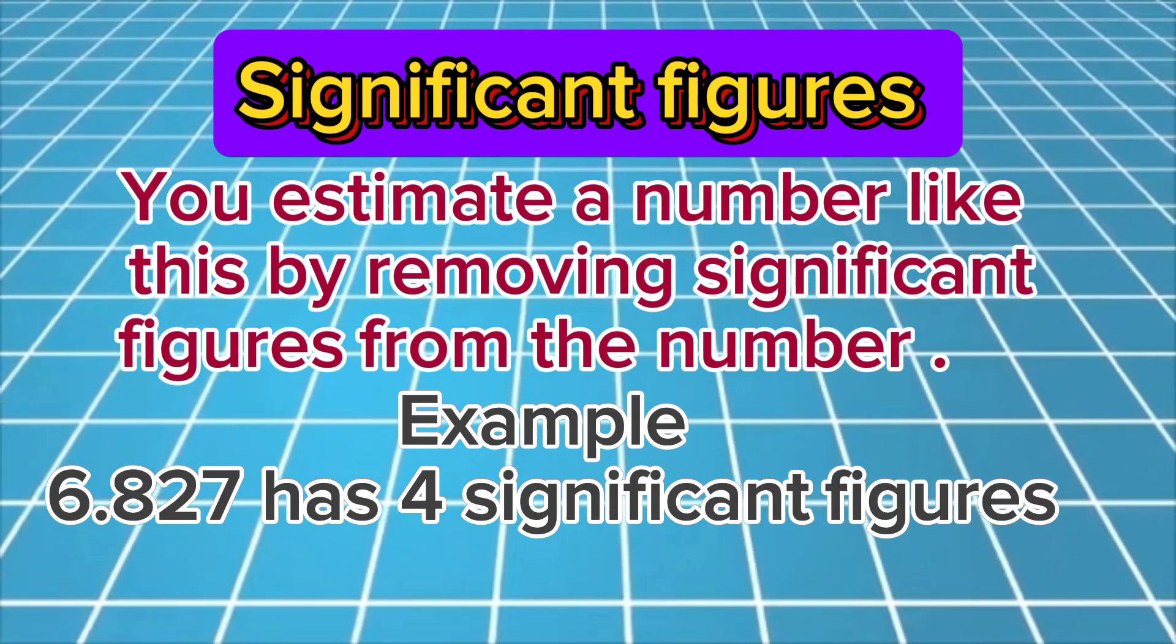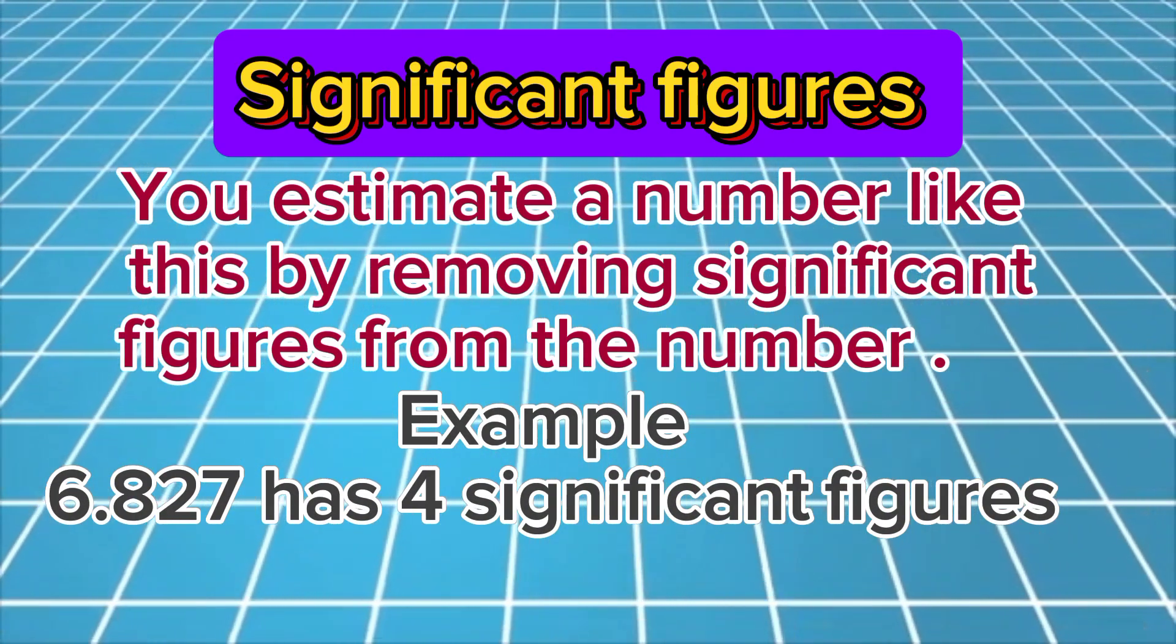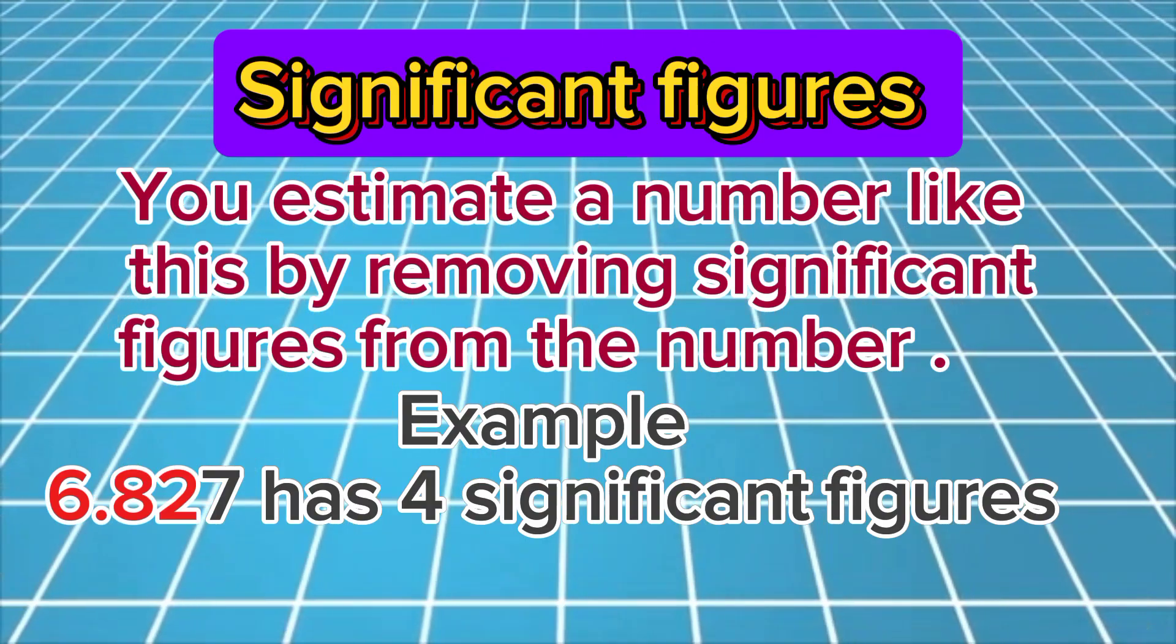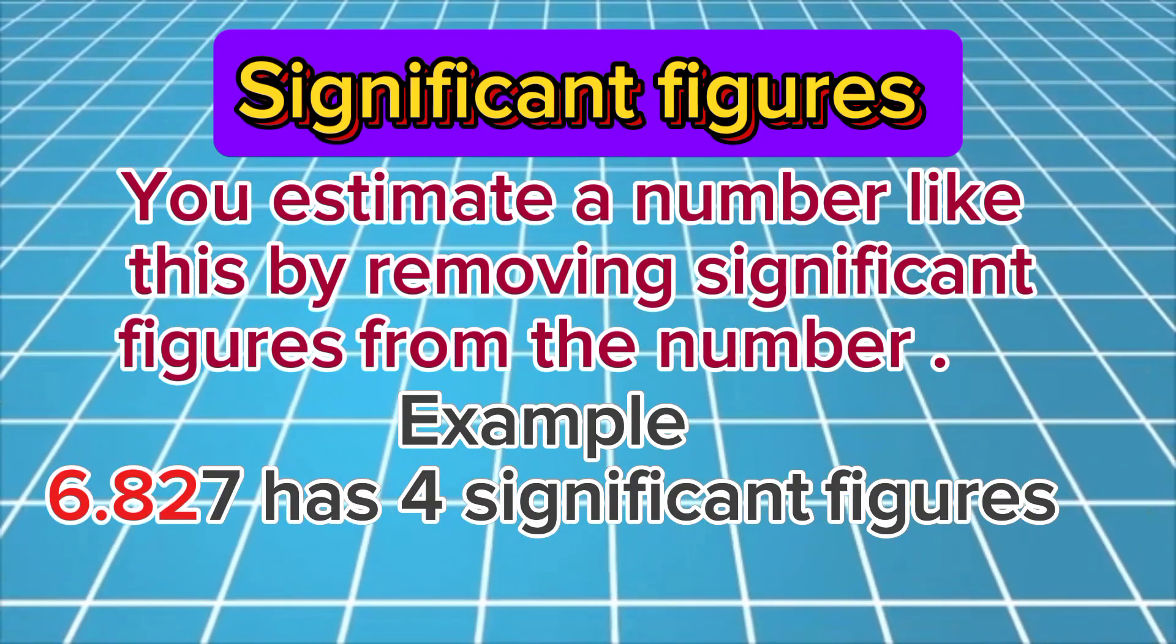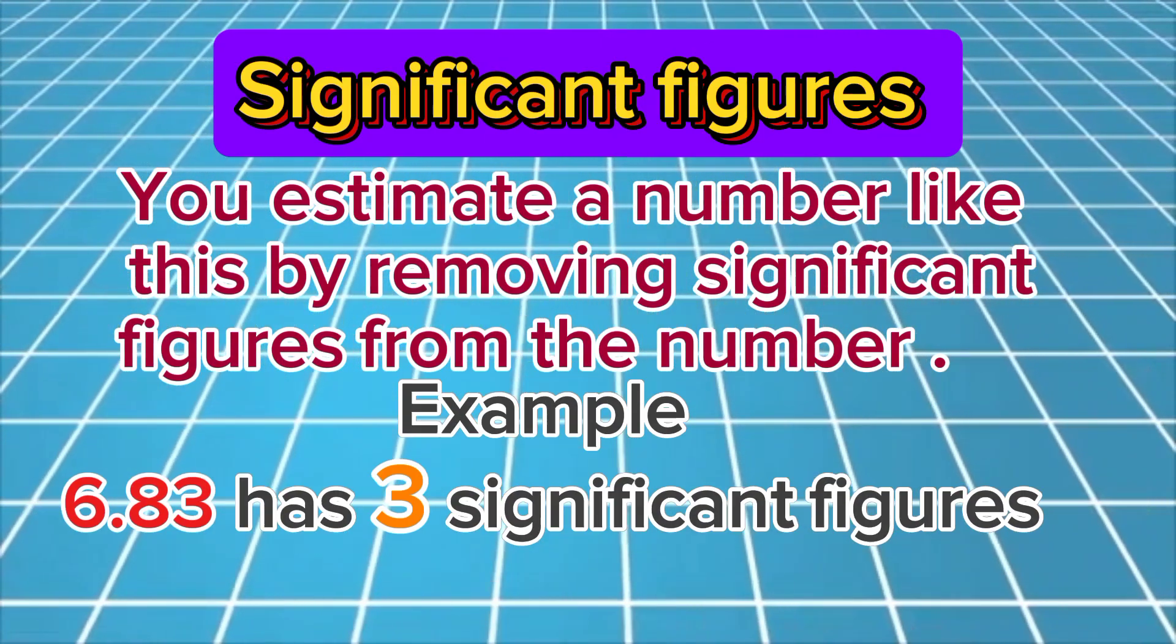For example, 6.827 has four significant figures, but if you wish to write it to three significant figures, it would mean removing the seven and rounding up, so it would be 6.83.